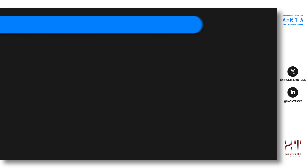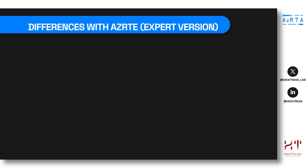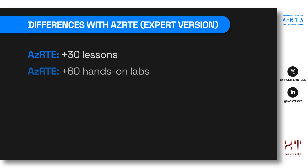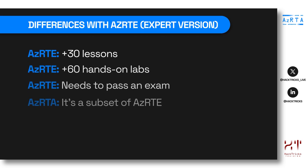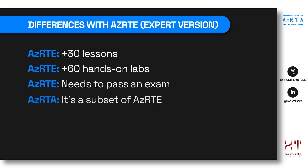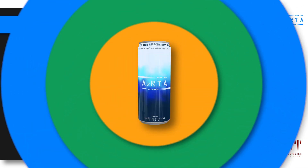You might also be interested in knowing the differences between this certification and the Expert Version 1, the Azure Red Team Expert. The Expert Version actually has more than 30 lessons, more than 60 labs, and has an exam that you need to pass in order to get certified. Also note that this Apprentice Version is just a subset of the Expert Version 1.